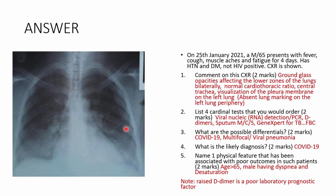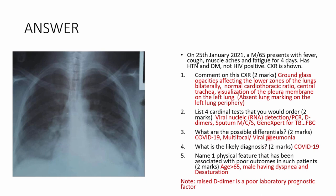On the X-ray, the notable finding is opacities at the lower zones of both lungs that are not completely opaque — you can see through them, so you can't call them consolidations. This is referred to as a ground-glass appearance affecting the lower zones and periphery. The cardiothoracic ratio is marginally normal and the trachea is central. There are also absent lung markings in one area, possibly indicating a pneumothorax or trapped air. This is a typical X-ray of COVID-19 pneumonia.